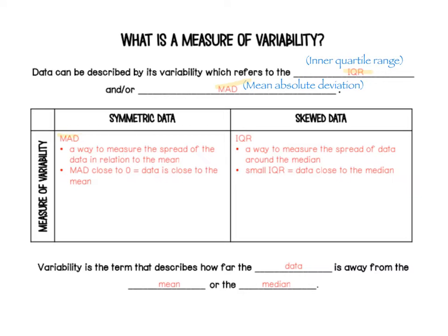So the MAD value is a way to measure the spread of the data in relation to the mean. A MAD close to zero means that the data is close to the mean.